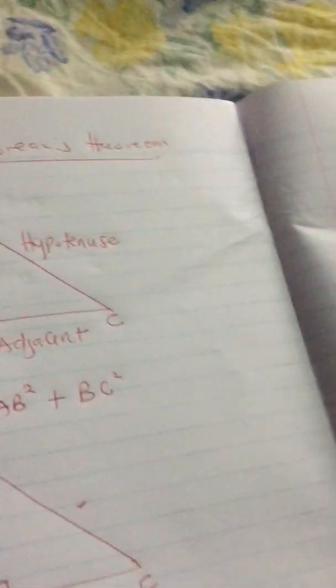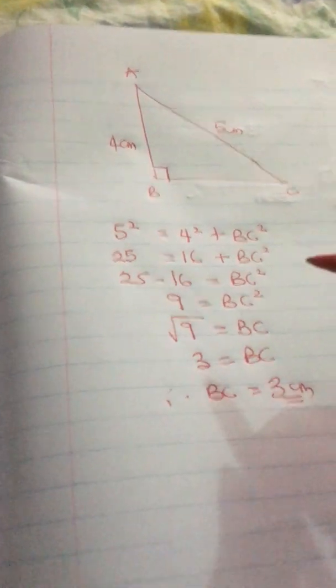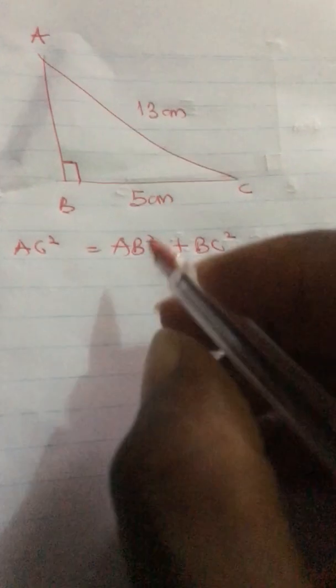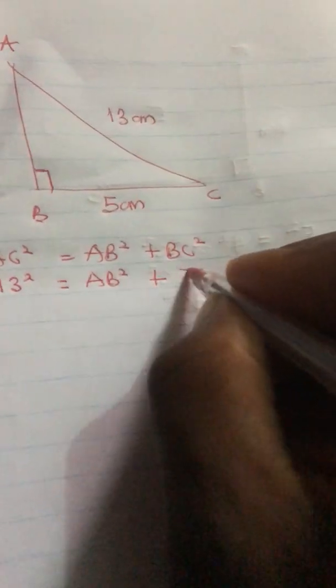Let's look at another example. We have triangle ABC with AC = 13 centimeters and BC = 5 centimeters, and we need to find AB. Always make sure there is a right angle triangle. The moment you see the right angle, you can use the Pythagoras theorem. The formula says the longest side: AC squared equals AB squared plus BC squared. AC is 13, so 13 squared; AB we don't know, so AB squared; plus BC is 5, so 5 squared.